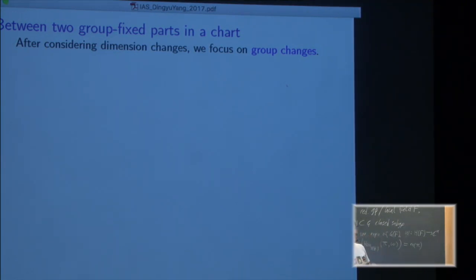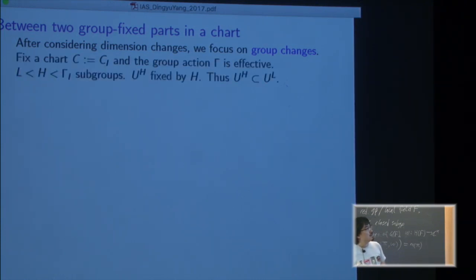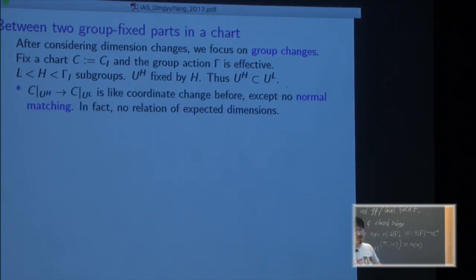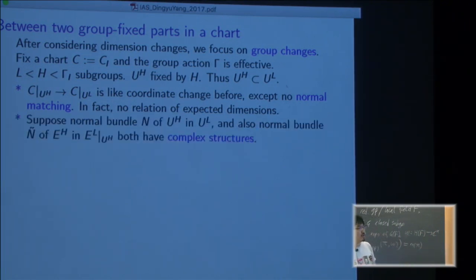Now we look at, in a single chart there might be different group parts. And so look at two subgroups and that seemed to fit together with the previous themes. So the bigger group has a smaller submanifold - I use U to restrict the chart over the smaller thing. It looks like a coordinate change except there's no matching of the normal direction anymore. The expected dimension don't have any relation. So let's suppose this condition: the normal bundle of the base and the fiber has a complex structure.